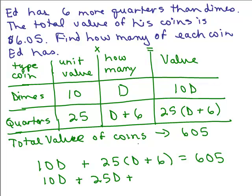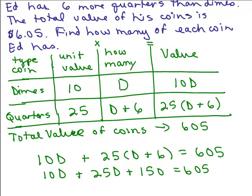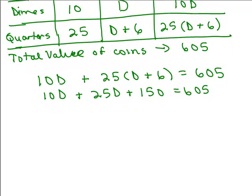We have 10D plus 25D. Now, when I do 25 times 6, remember to distribute, you're going to get 150 equals 605. And over on the left here, I can add the like terms, 10D plus 25D.